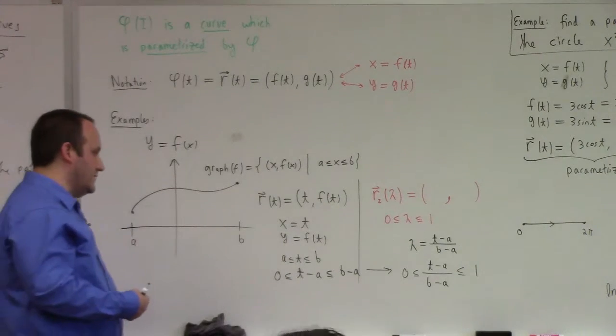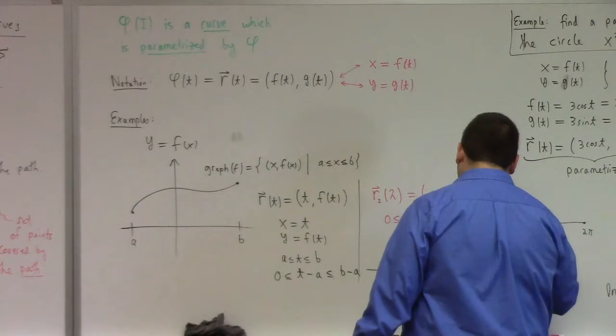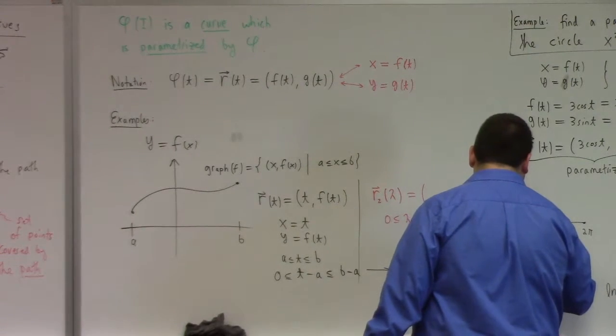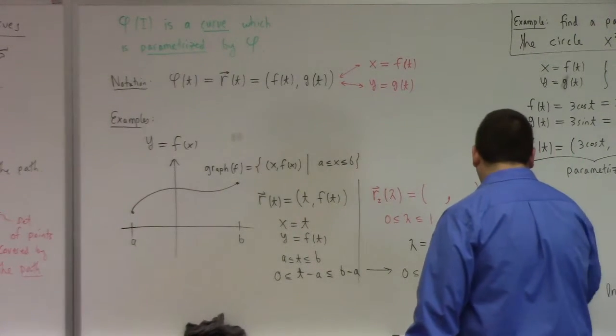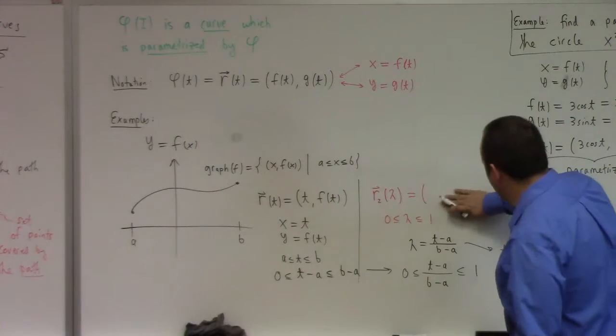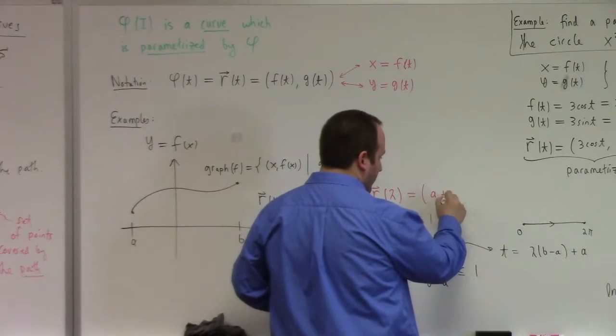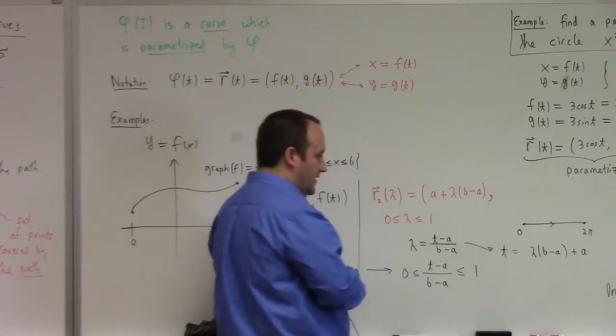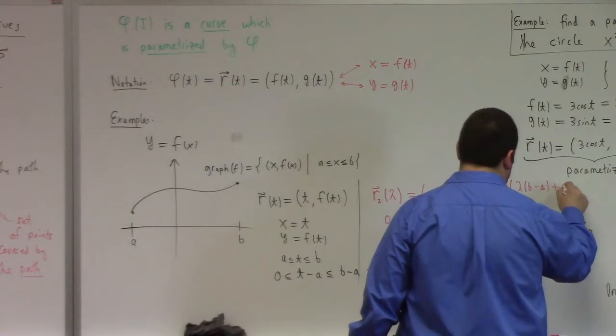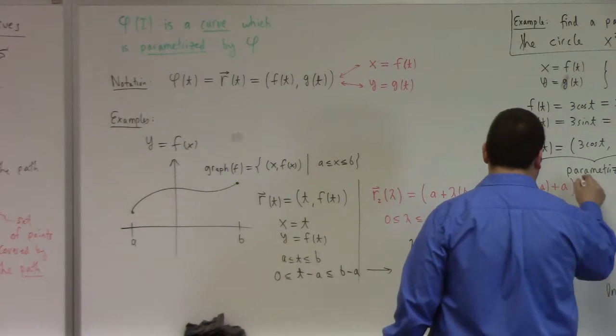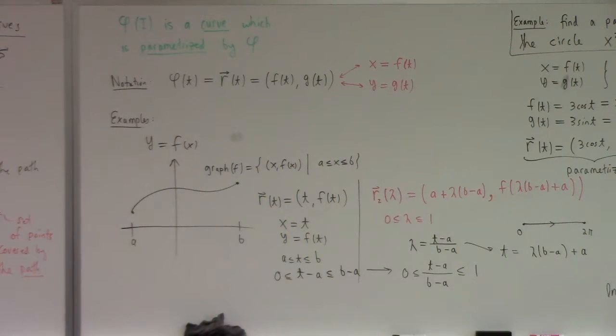If you solve that for t, you just plug that into the other one. If I solve that for t, what do I get? I get t equals lambda times b minus a plus a. So it follows then that the equations I want are nothing more than a plus lambda times b minus a, comma, f of lambda times b minus a plus a.